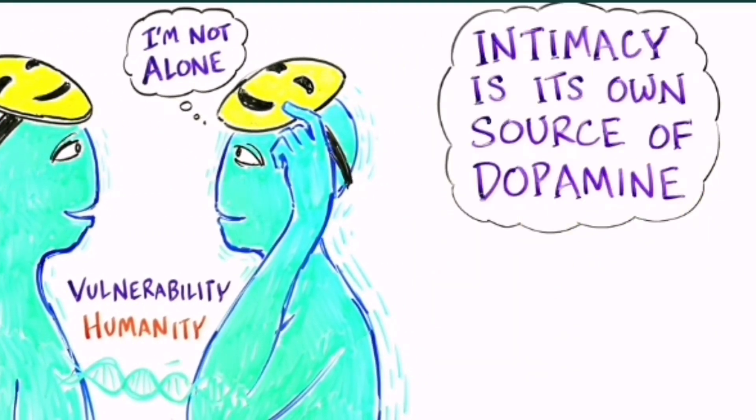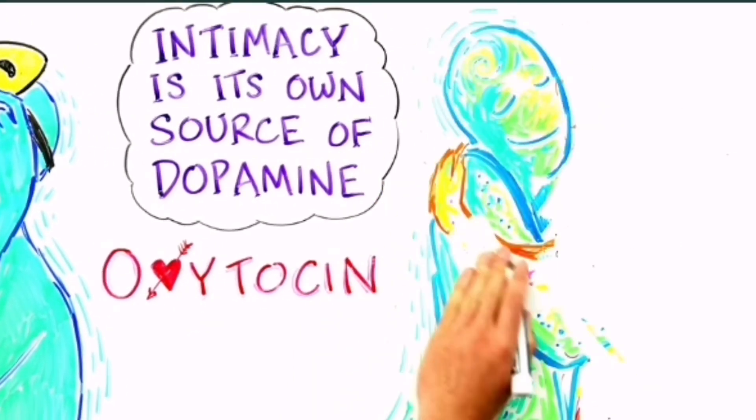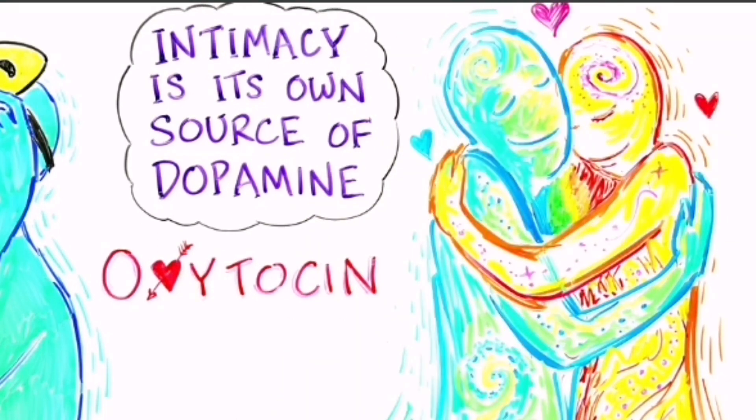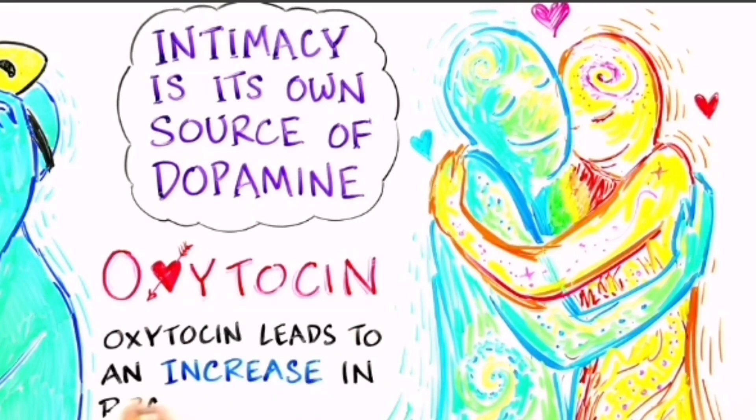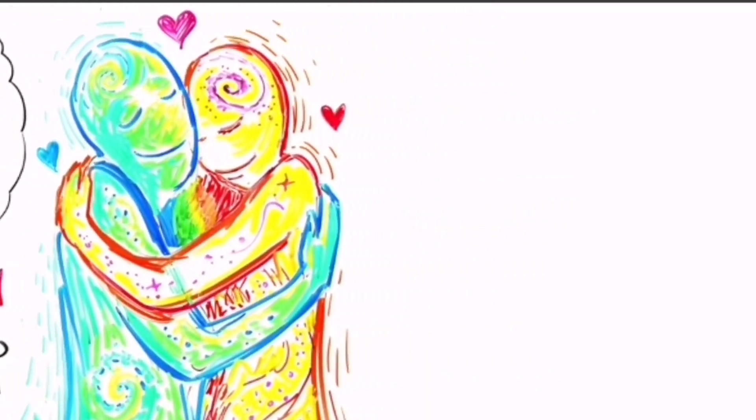Intimacy is its own source of dopamine. Oxytocin, a hormone much involved with falling in love, mother-child bonding, and lifetime pair bonding of sexual mates, binds to receptors on the dopamine secreting neurons in the brain's reward pathway, and enhances the firing of the reward circuit tract. In other words, oxytocin leads to an increase in brain dopamine.